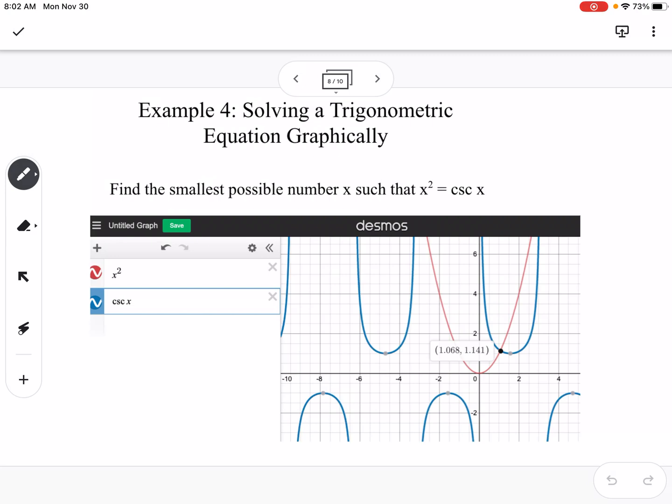So example 4 is solving a trig equation graphically. We want to find the smallest possible number such that x squared equals cosecant of x. This is not something we can do algebraically, so this is something we would go to Desmos and graph. So I plugged both of these in. The red graph is our parabola, it's x squared, and our blue graph is cosecant of x.